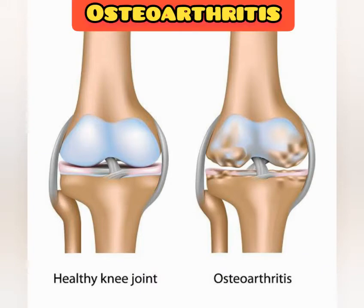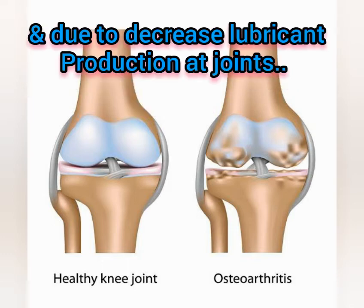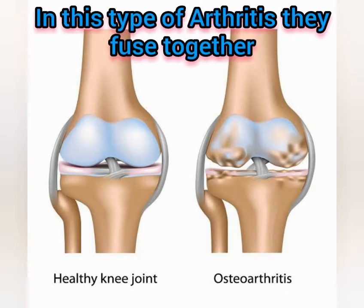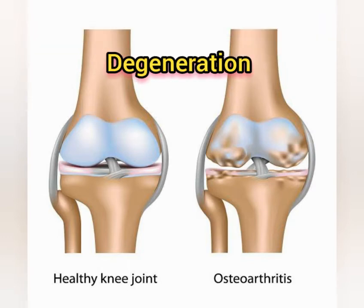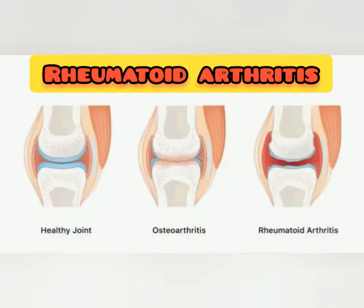Osteoarthritis is due to degeneration of the cartilage present at the joints, or due to decreased lubricant production at joints. A joint is a point where two bones meet and allow movement. In this type of arthritis, the two bones fuse together and become totally immovable. In joints, there is cartilage present between the bones.